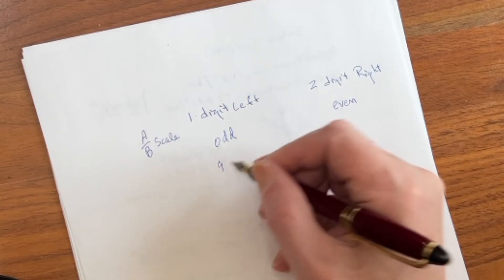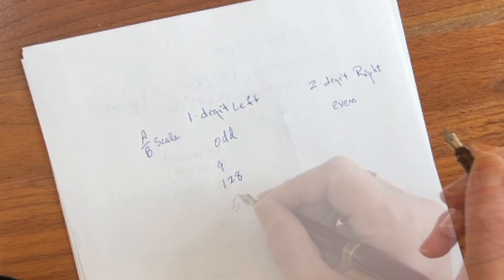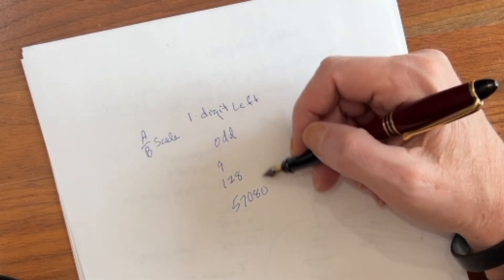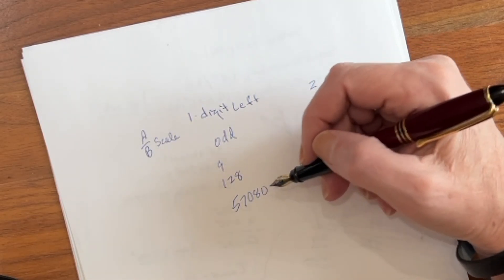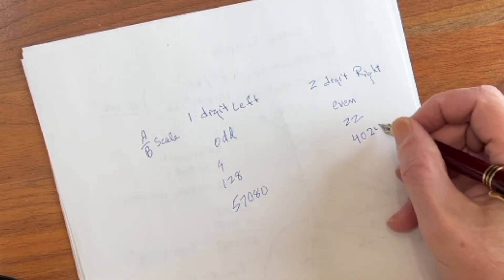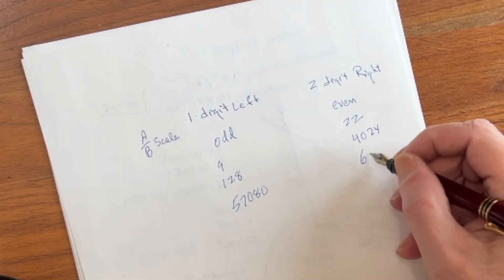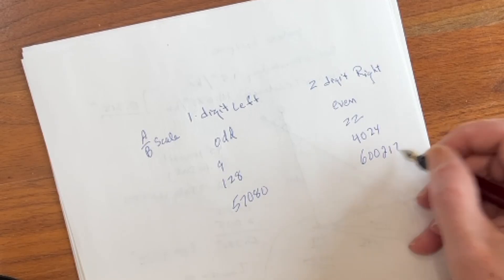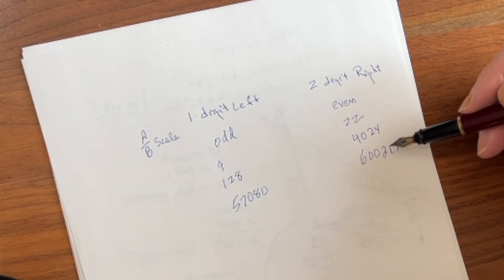So for example, 9, 128, 57,080, these will all get their square roots from the left side of the A-B scale. Whereas 22, 4024, and 600,217, these will be done on the right side.